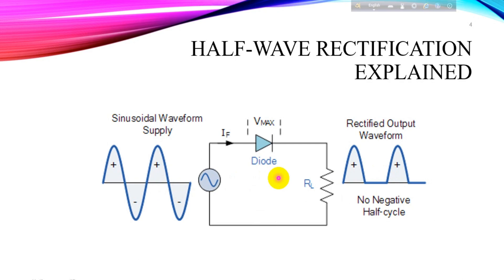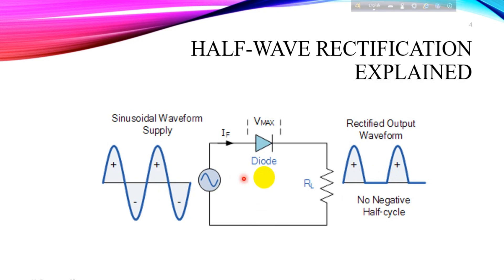However, it blocks current flow in the opposite direction. Now let's see how a half wave rectifier circuit works. We have an AC input and we place a diode in series with it along with the load resistor. If an alternating voltage is applied across the diode, during the positive half cycle the diode will conduct, passing current, and during the negative half cycle the diode will not conduct, blocking the flow of current. Conduction through the diode only occurs during the positive half cycle and is therefore unidirectional DC.